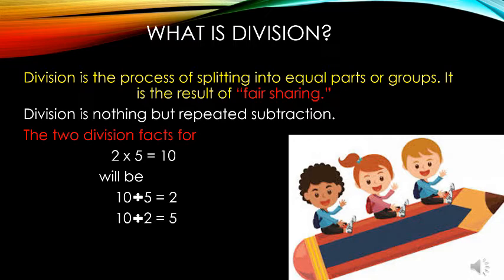Division is nothing but repeated subtraction. The two division facts for 2 multiplied by 5 equals 10 will be: 10 divided by 5 is equal to 2, and 10 divided by 2 is equal to 5.